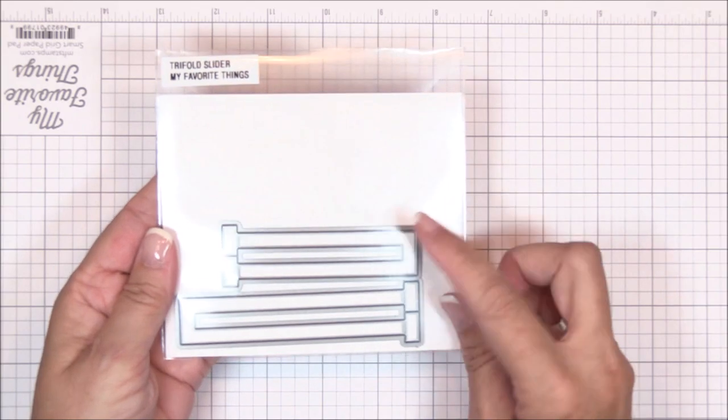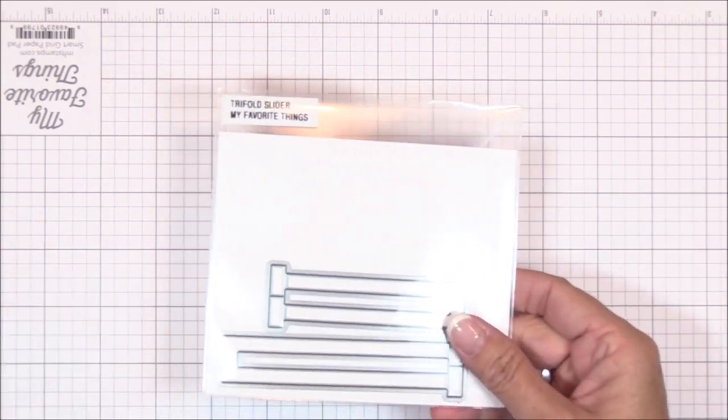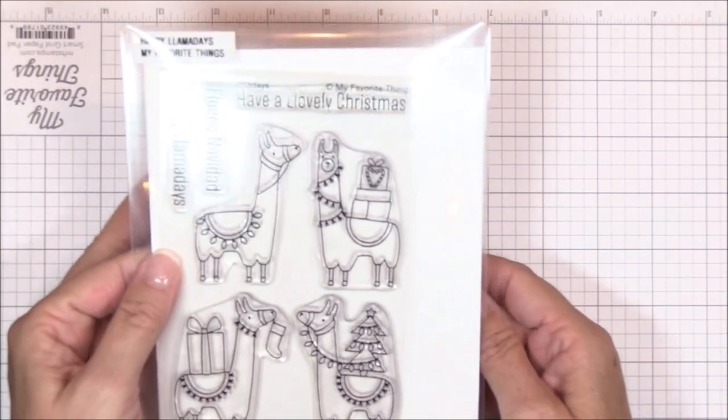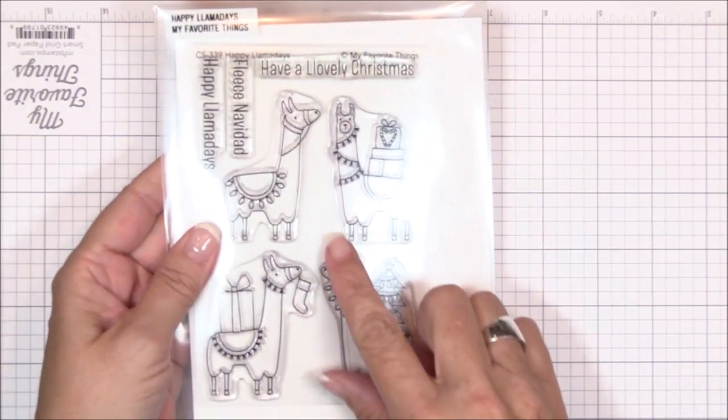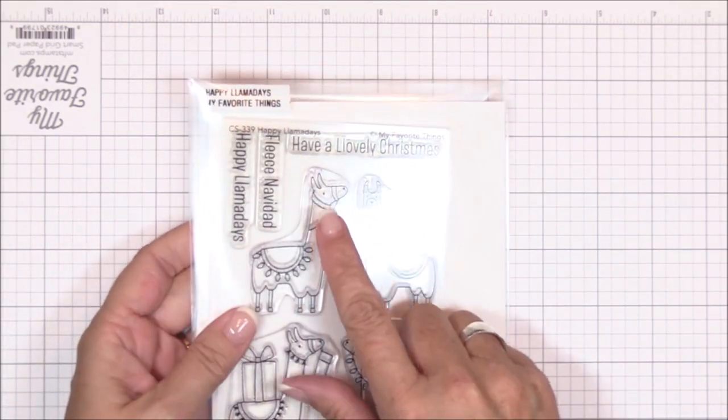The tri-fold slider dies make adding this interactive mechanism to your cards precise and easy. The dies are designed for a typical A2 card base and can be used in the horizontal or vertical formats.